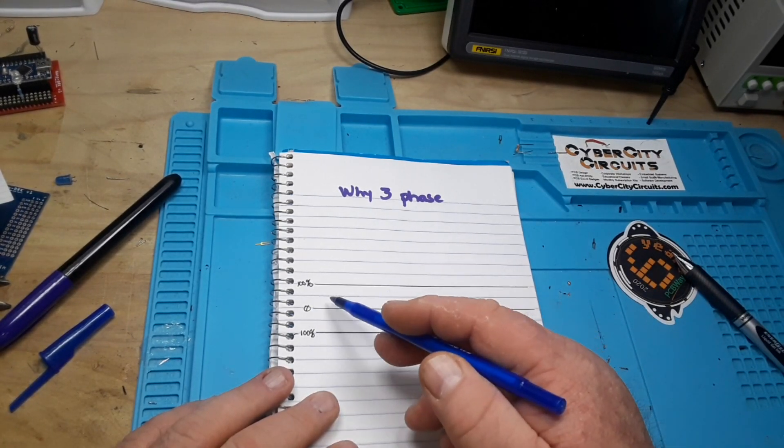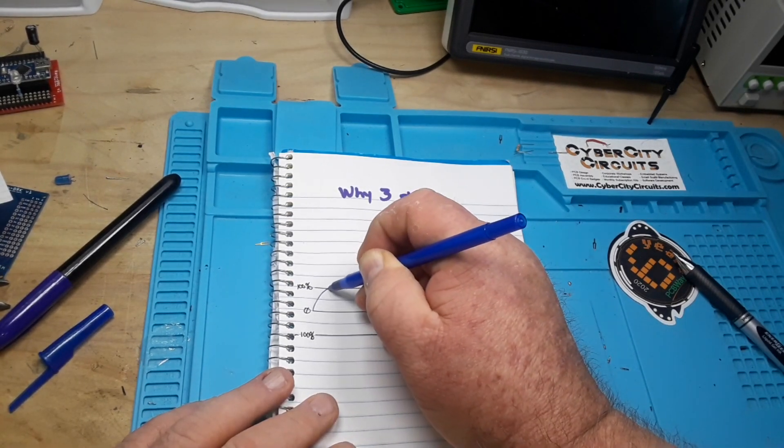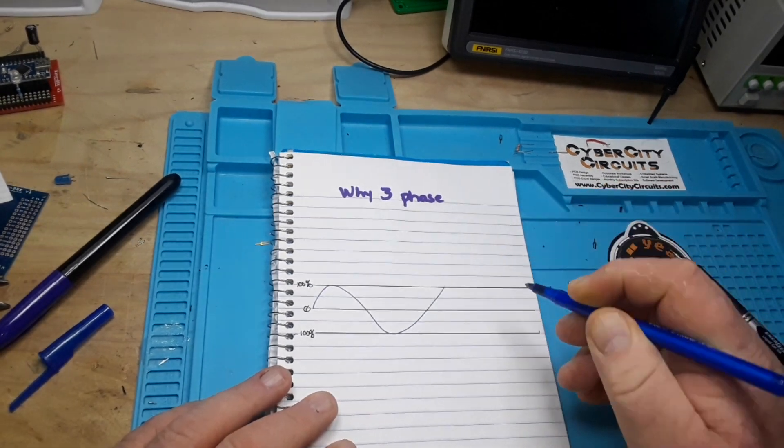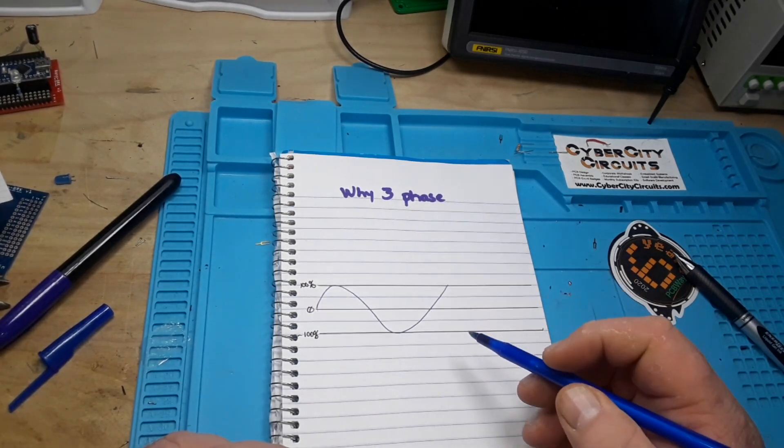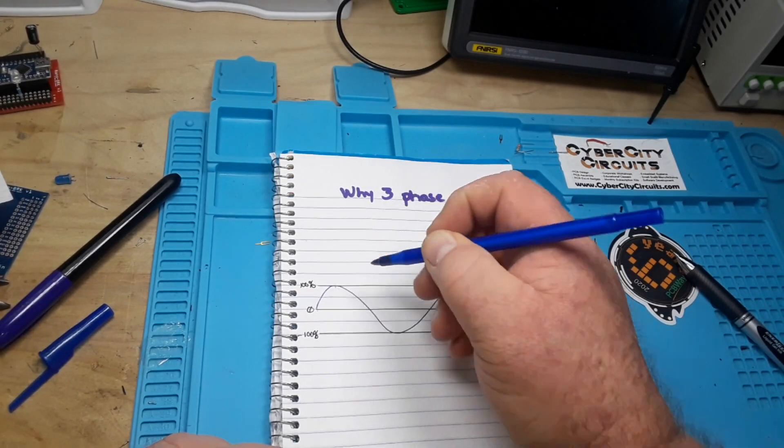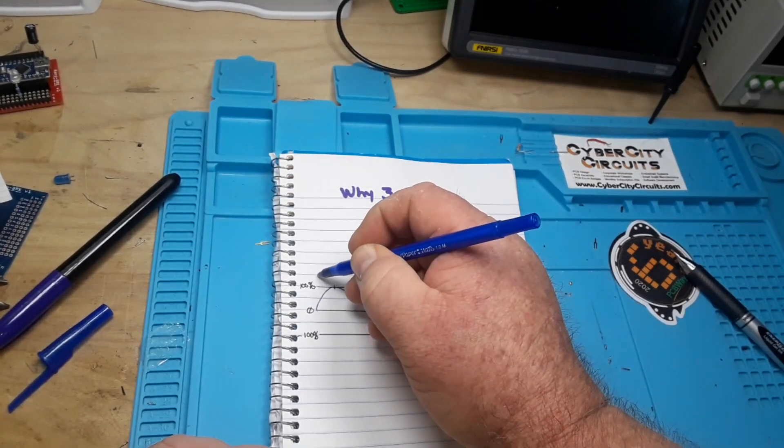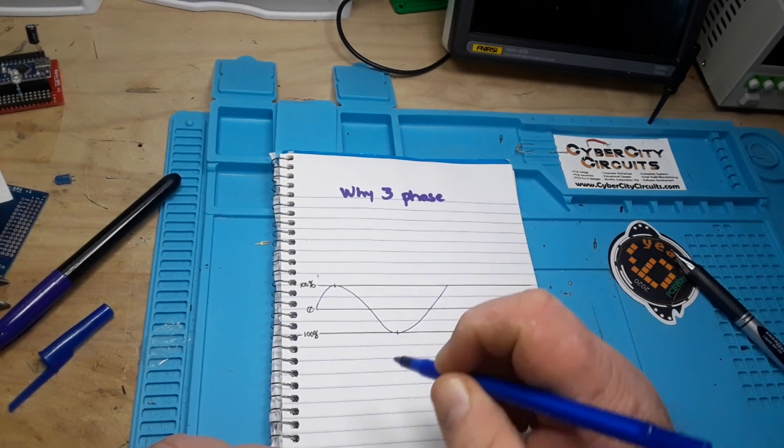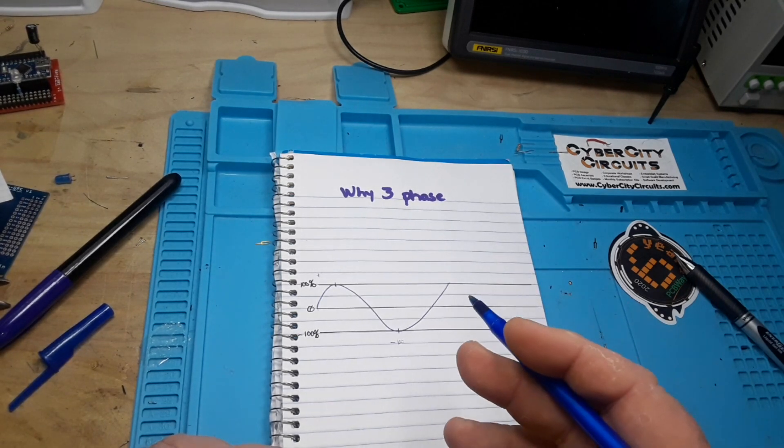This is zero versus sine wave. So let me draw the sine wave first. This is zero, 100 percent, minus 100 percent. This is your single-phase power. So at this point right here you have 100 percent power, we'll call it the positive polarity. At this point here you have minus 100 percent power in the negative polarity.